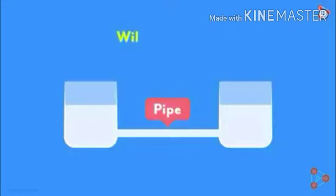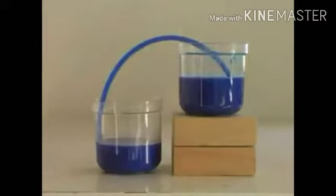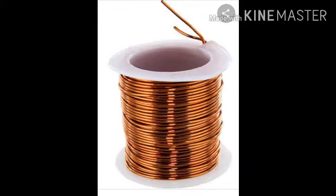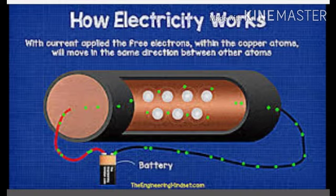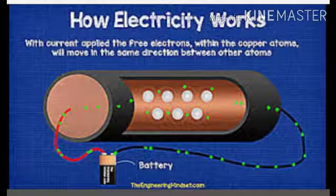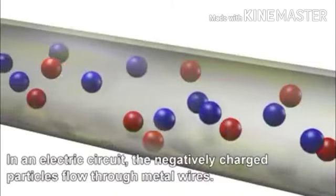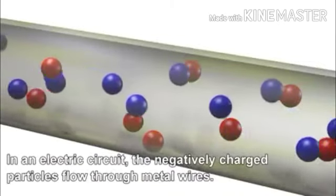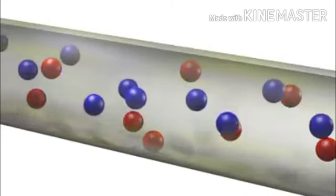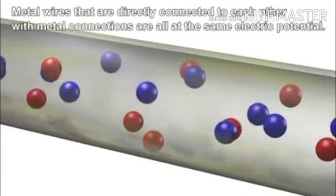But how? We have seen that when both containers of water are at the same level, water will not flow — there has to be a difference in the level of water, one at higher level and another at lower level. In case of water we can do this by raising the level of the container. But in case of a wire, how will we raise the level? In the case of electricity, electrons are flowing, so we have to increase the level of electrons at one end of the wire.